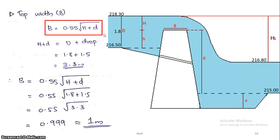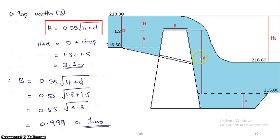The top width B of the crust is given by the equation: B = 0.55 × √(H + D). This is a direct equation. We need to calculate H + D. The distance from H is to the water surface. H + D: looking at the downstream bed level, the value works out to 218.3 − 215.0 = 3.3 meters.